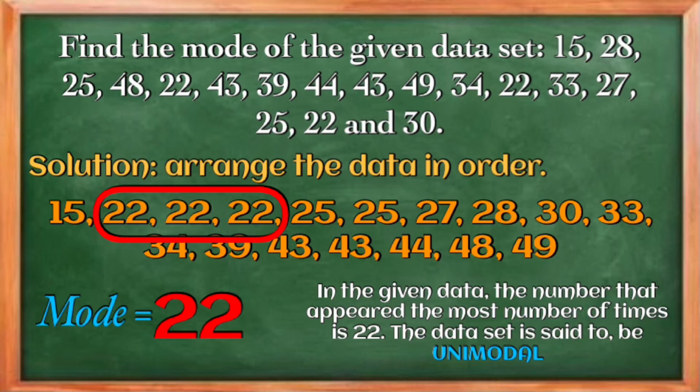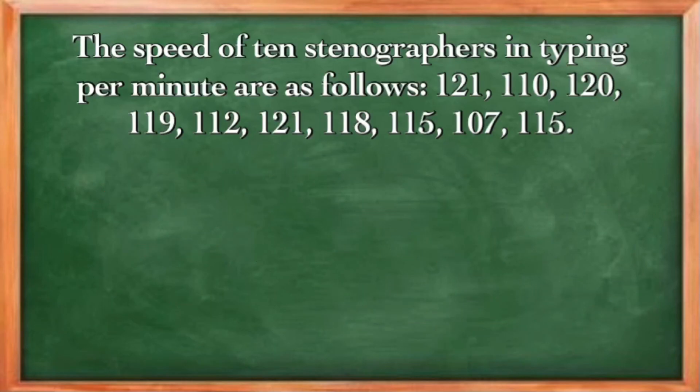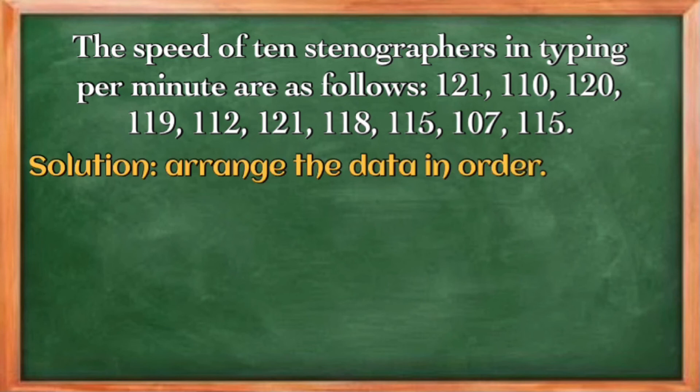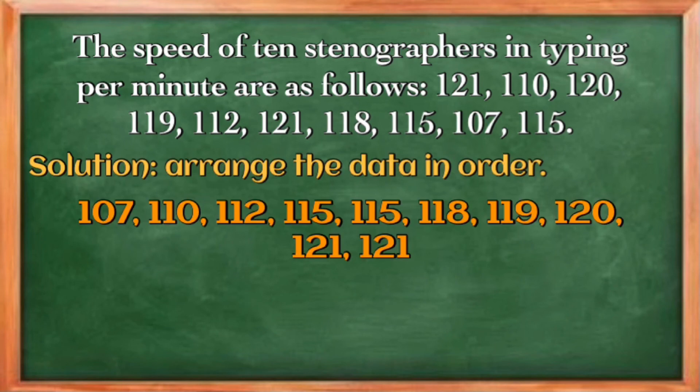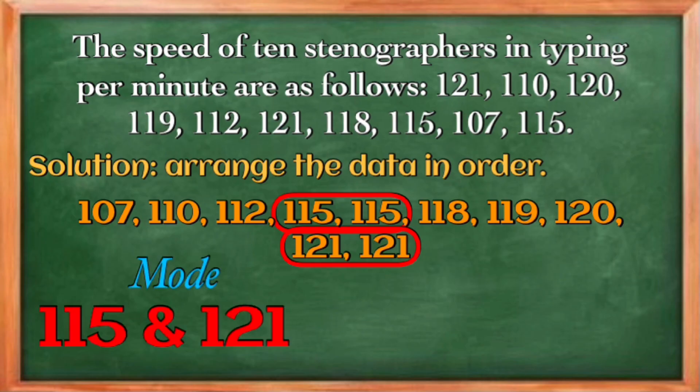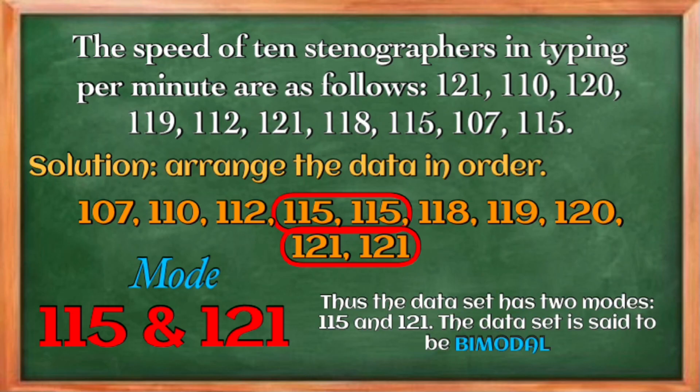Now let us try to have another example. The speed of 10 stenographers in typing per minute are as follows. Again, arrange the data in order. We can see here, upon arranging, that 115 and 121 both have frequency of 2, and the rest we only have one. Therefore, the mode is 115 and 121. We have two modes, and the data set that is said to be bimodal set.